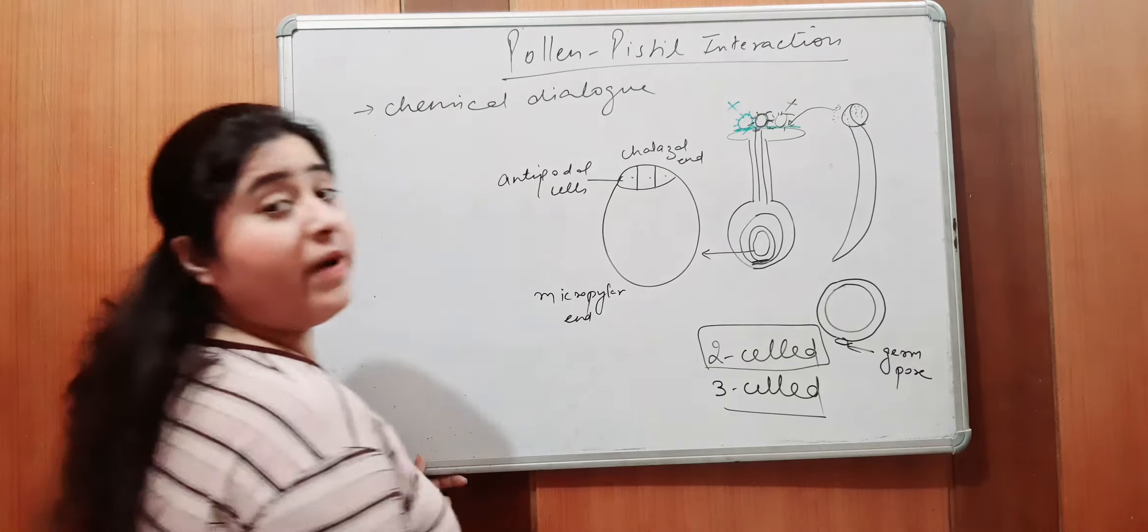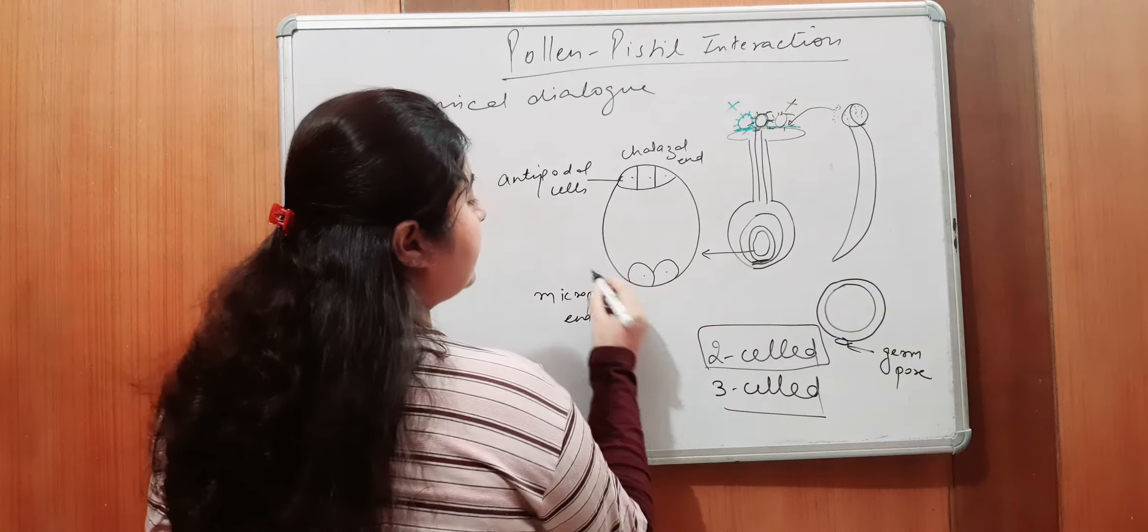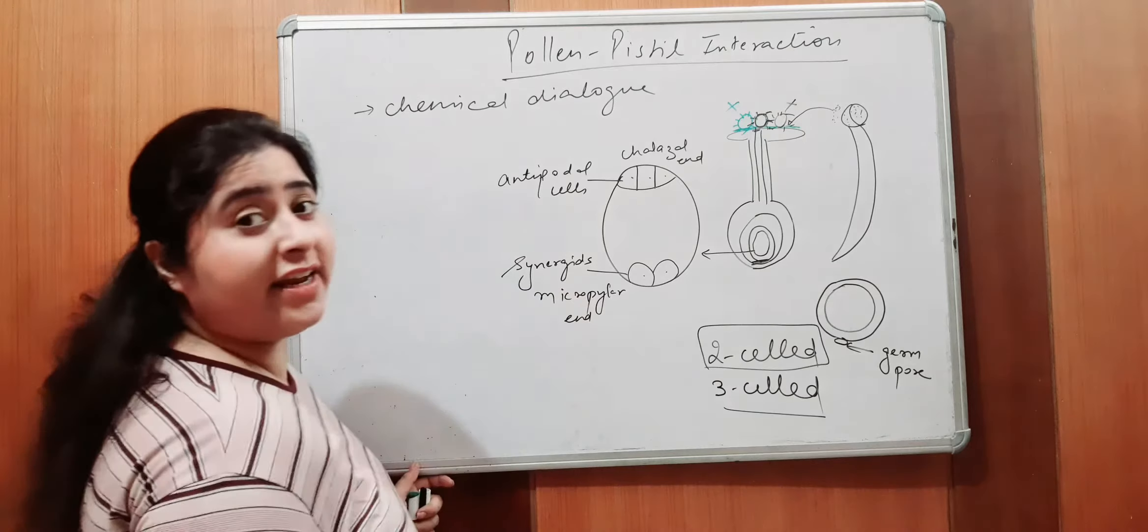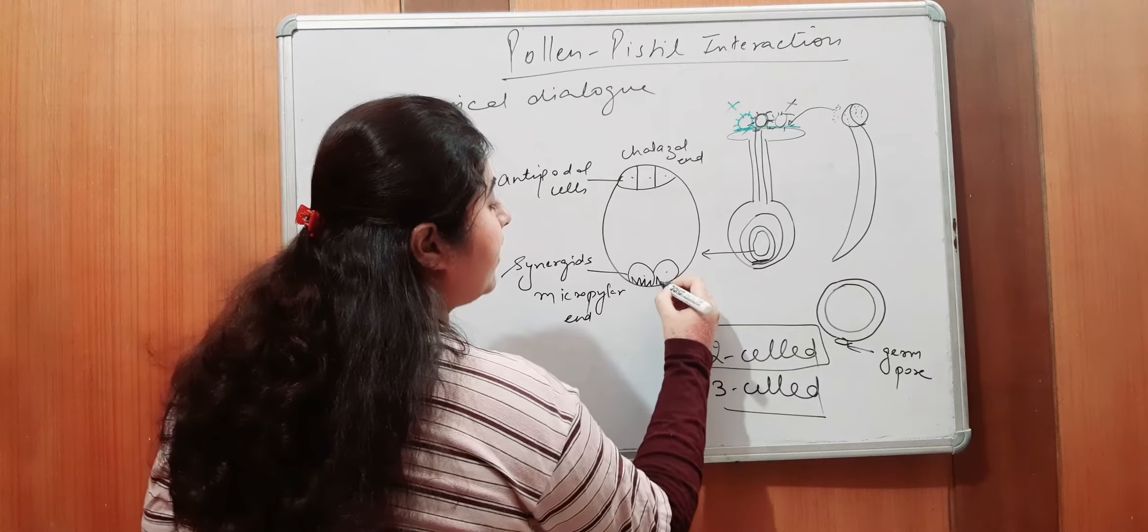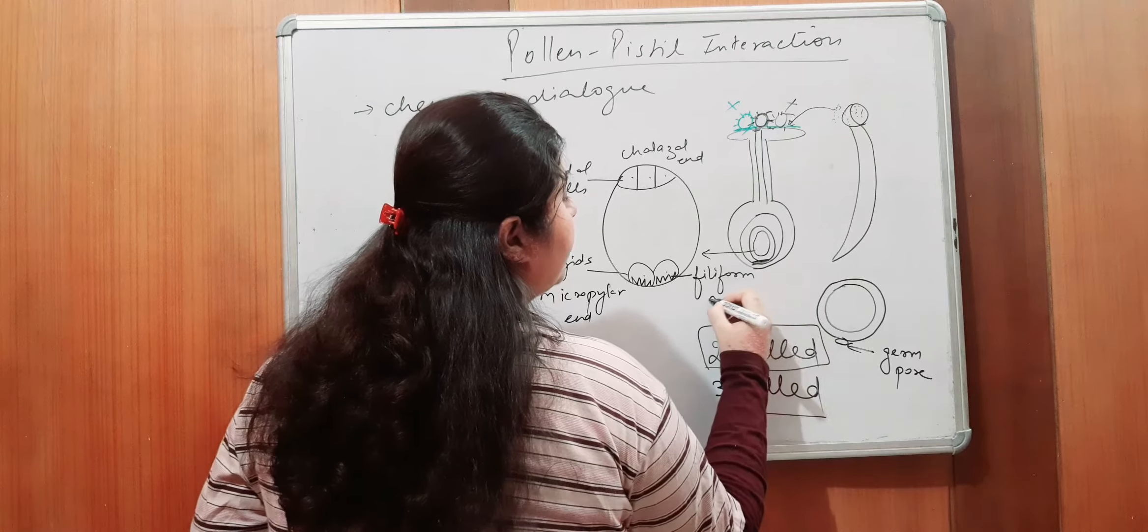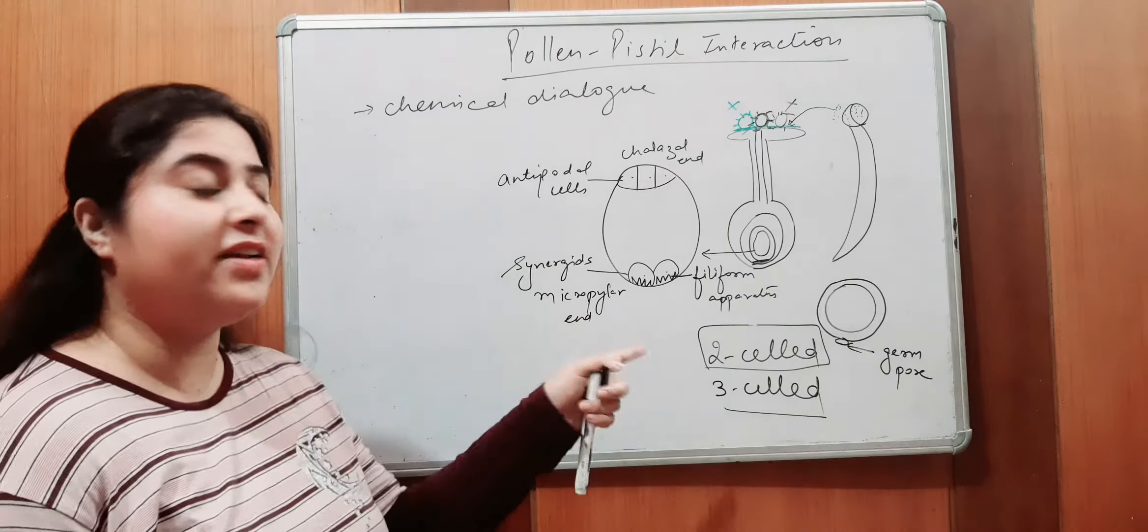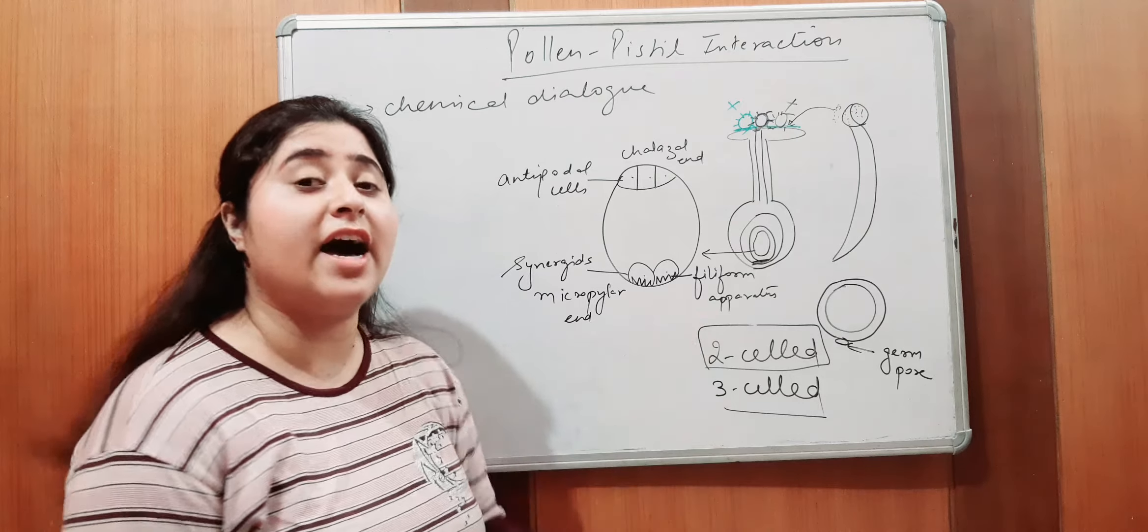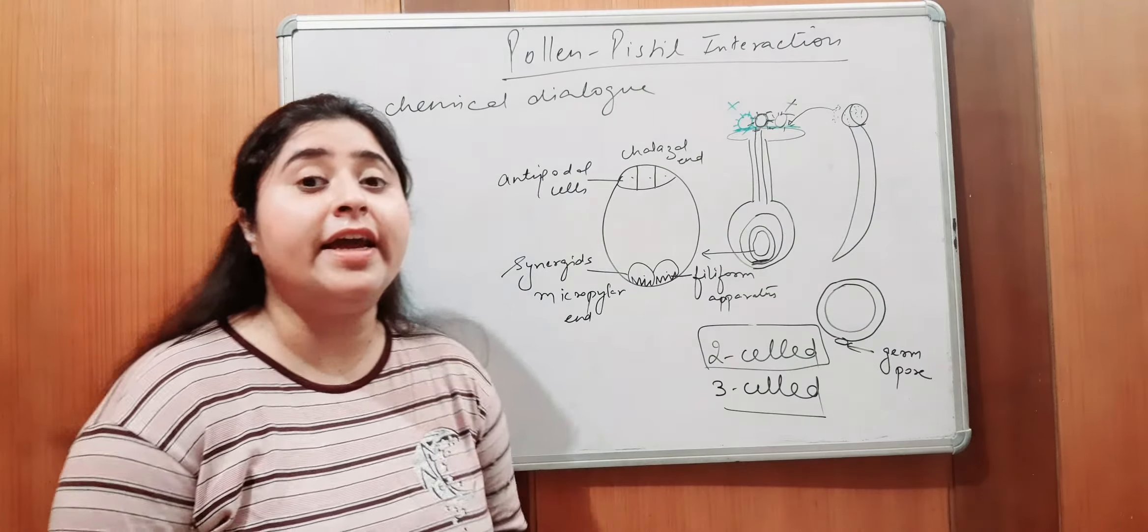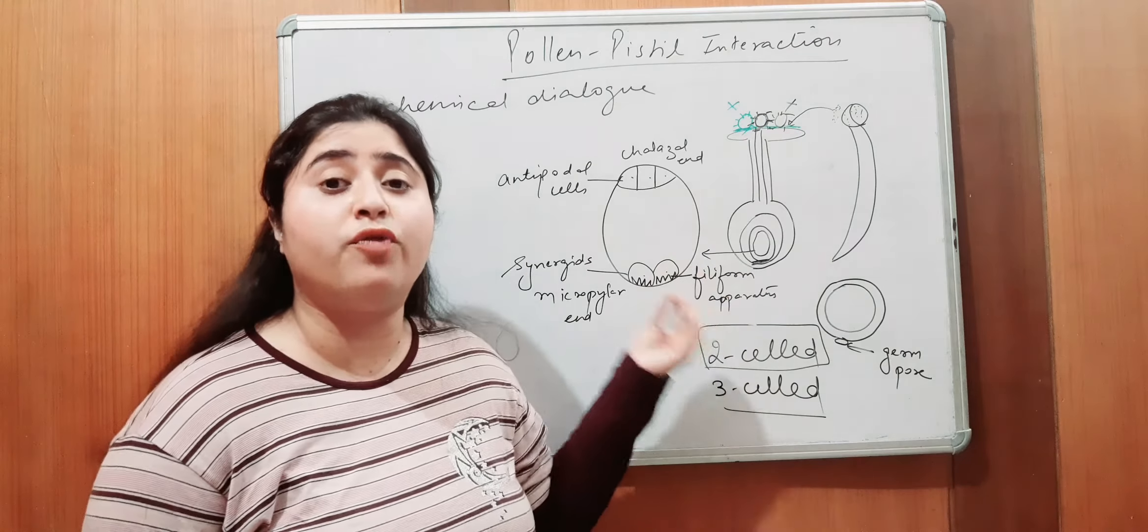Micropylar end having two cells, and these cells are called as synergids. In those synergids, there are some apparatus, thick linings are present, which are called as filiform apparatus. So, guys, if you remember this filiform apparatus, I have told you something about it. Filiform apparatus ka eek bada hi important role hai. It guides the pollen tube to enter inside the female gametophyte.